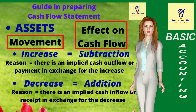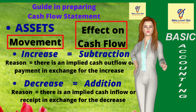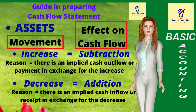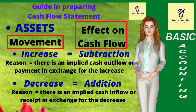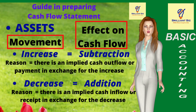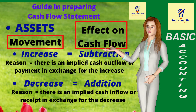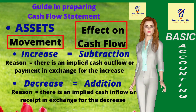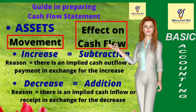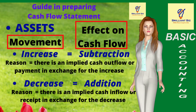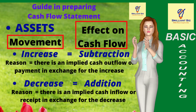In preparing the cash flow statement, always remember that an increase or decrease in asset accounts in the balance sheet has an inverse effect on the cash flow statement. An increase in assets must be subtracted or taken up as a cash outflow, while a decrease in assets must be added or taken up as a cash inflow. This is because when the company's assets are increased, cash is assumed to have been used to acquire them — hence a cash outflow — and when assets decrease, a receipt of cash is assumed — hence a cash inflow.